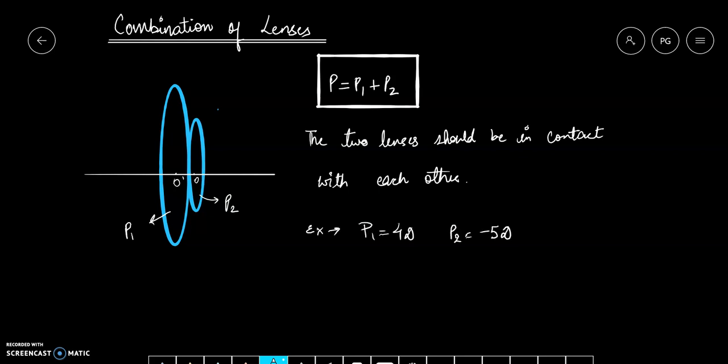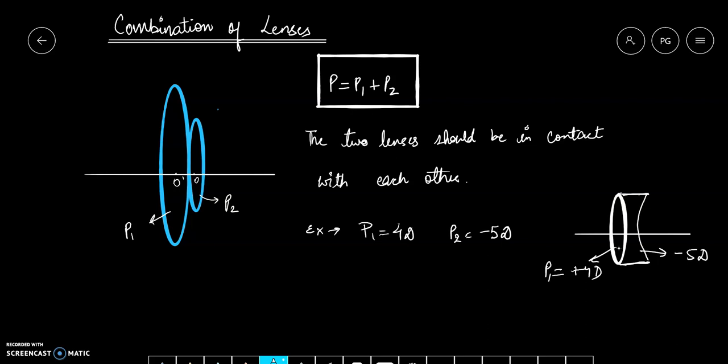The two lenses should be in contact with each other. Let us take an example. I have two lenses. One has power P1 which is equal to plus 4 diopter, and P2 has power minus 5 diopter. Minus means it has to be a concave lens. The lens with power P1 is plus 4 diopter, it has to be a convex lens. And the lens with power P2 is equal to minus 5 diopter, it's a concave lens.